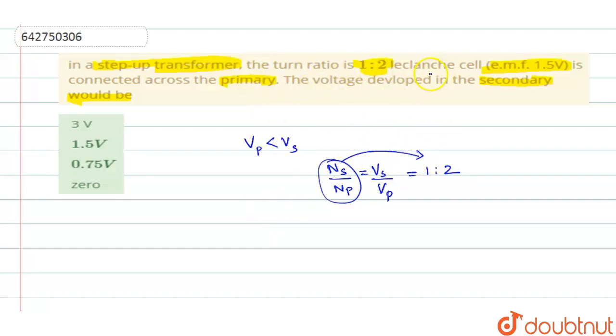But see here, they are connecting across the primary a Leclan's cell. So what do you mean by Leclan's cell? It is like a chemical cell which works only on the direct current. So Leclan's cell works on direct current or you can say it as DC current.